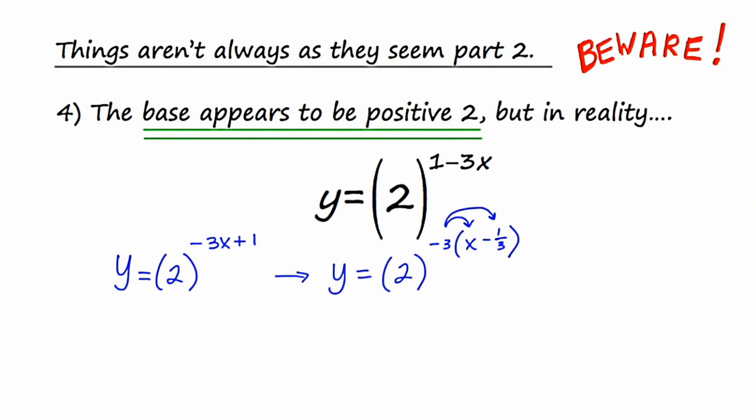Now, like the last example, what we're left with is this very awkward situation right here. 2 to the negative third. It's just sort of hanging around. Now, 2 to the negative third, if you think to your rules of exponents, 2 to the negative third is really 1 over 2 cubed or 1 eighth. So this can be rewritten one other time as y equals 1 eighth to the x minus 1 third.